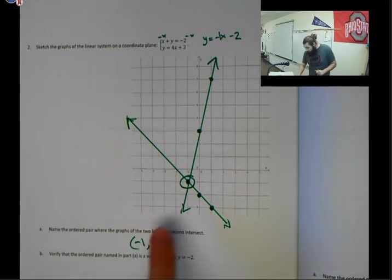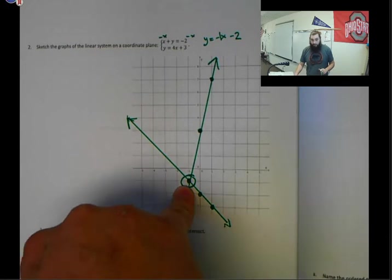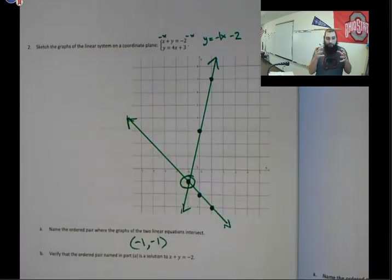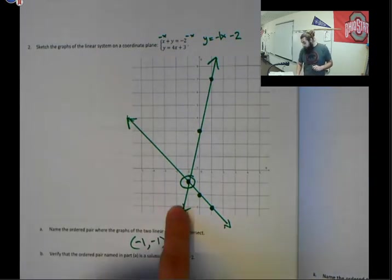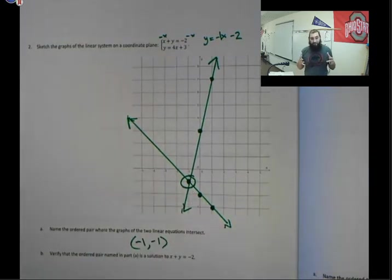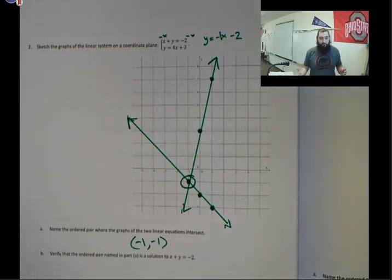A solution to a system of equations is given as an ordered pair. The reason is because it's describing this point. It tells us the location of this point, because when we graph both of these lines, this is exactly where they're going to meet, exactly where they're going to intersect. So even when we use a different strategy in the future, solving a system of equations through either elimination or substitution, we're still going to represent our solution as an ordered pair, because that's what it is.